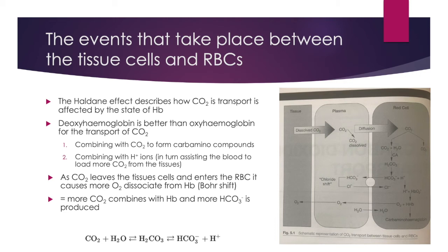Secondly, deoxyhaemoglobin is better at combining with hydrogen ions, and this in turn assists the blood to load more CO2 from the tissues. As CO2 leaves the tissue cells and enters the red blood cell, it causes more oxygen to dissociate from haemoglobin. As more oxygen is dissociated from haemoglobin due to the Bohr shift, this in turn means more CO2 is able to combine with deoxyhaemoglobin and more bicarbonate is produced.